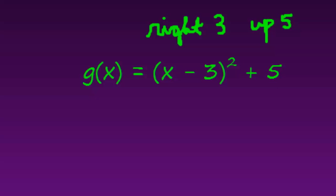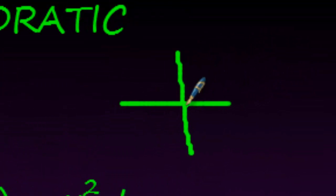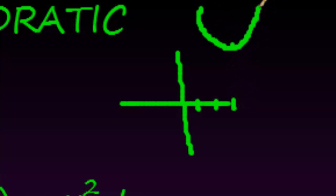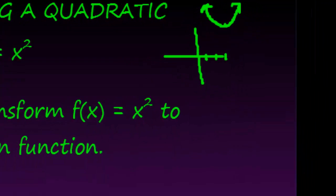So a quick sketch of this graph would then be where I take the parent vertex 0, 0. I move it to the right 3, and I move it up 5, and that is now the new graph shifted. And this would be the equation.